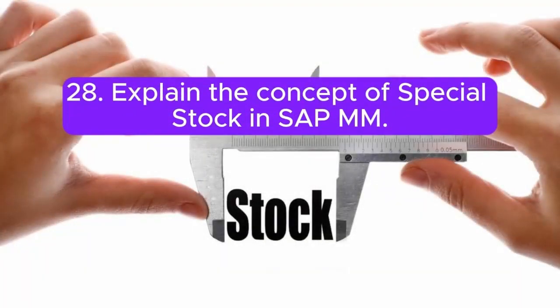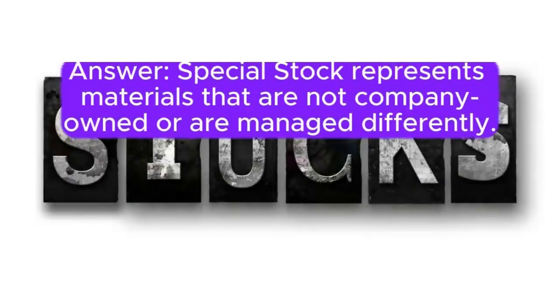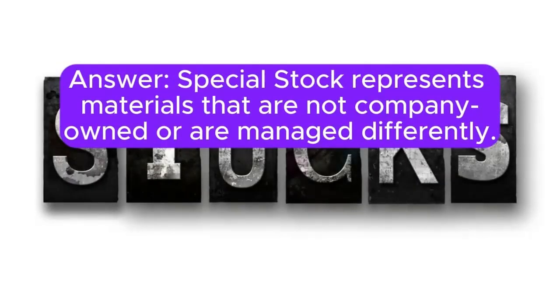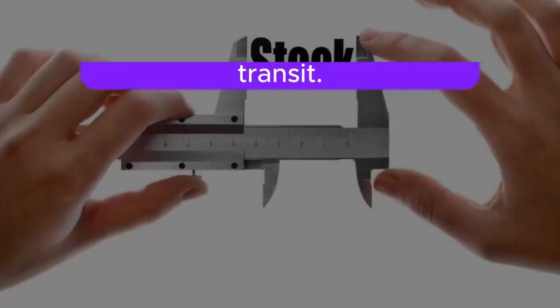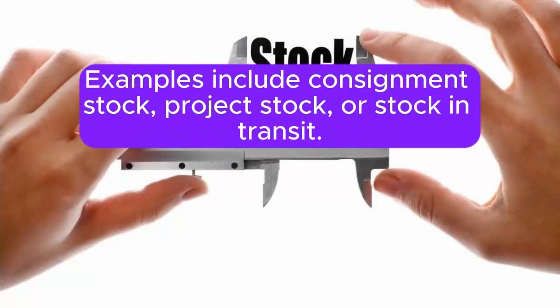Question 28: Explain the concept of special stock in SAP MM. Answer: Special stock represents materials that are not company-owned or are managed differently. Examples include consignment stock, project stock, or stock in transit.